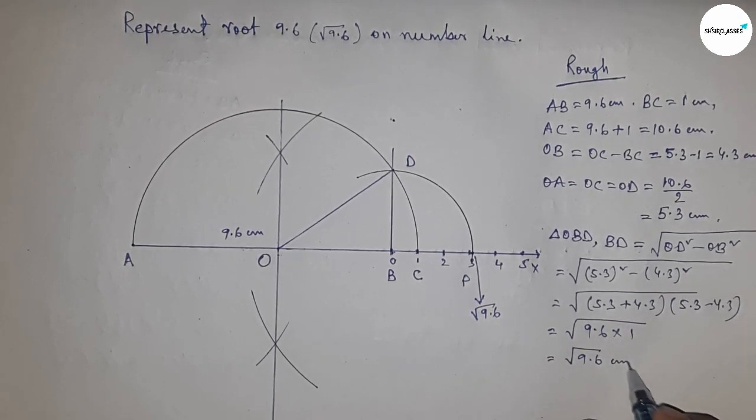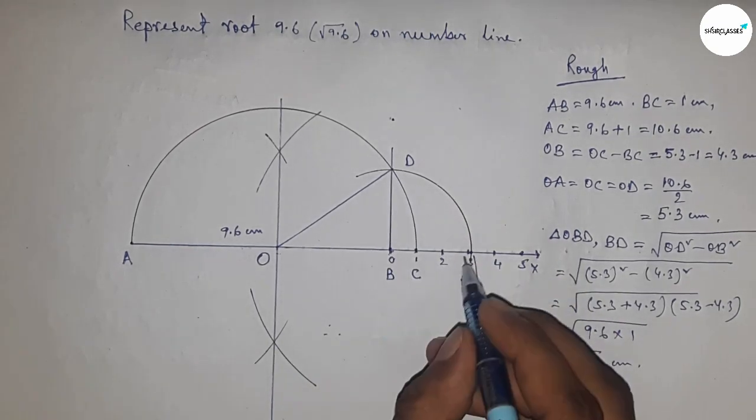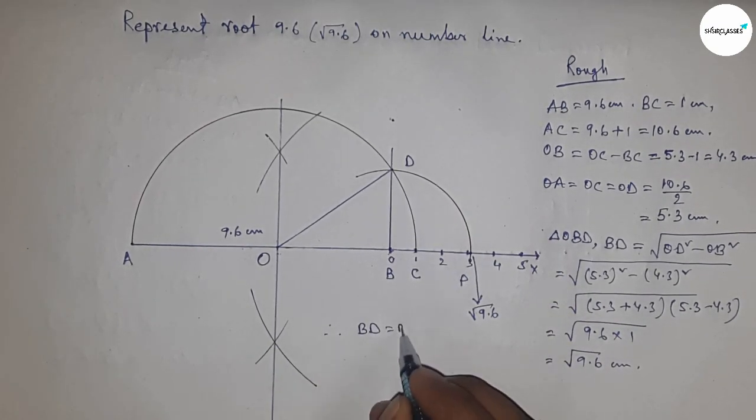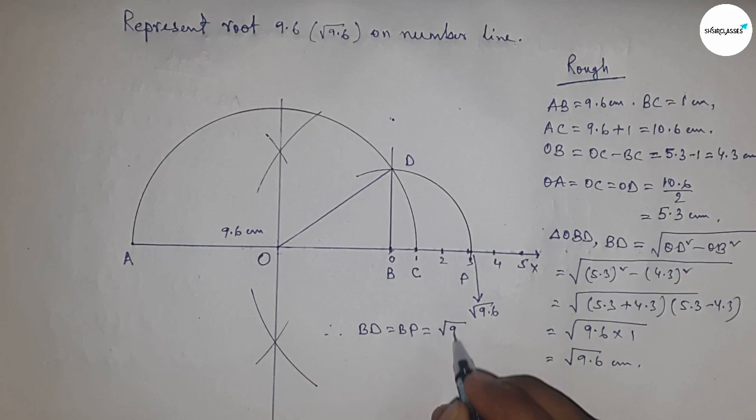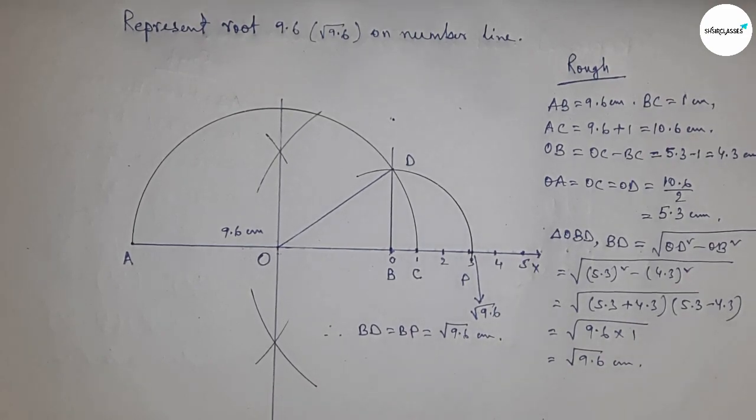Therefore, distance BD and BP are equal to root 9.6 centimeters. That's all. Thanks for watching. Please subscribe, like, and comment on my video. Thanks.